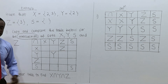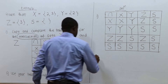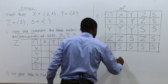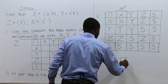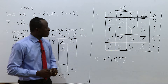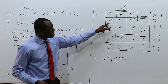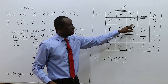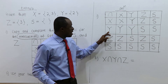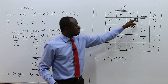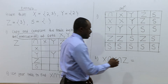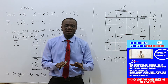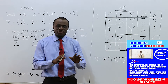Now let's see the second part: use your table to find X intersection Y intersection Z. So X intersection Y is Y, and then Y intersection Z gives us the empty set.